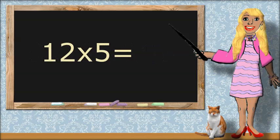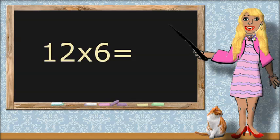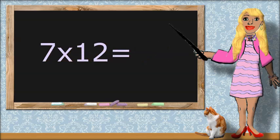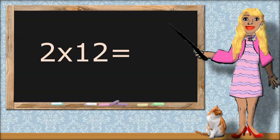Twelve times five equals sixty. Twelve times six equals seventy-two. Seven times twelve equals eighty-four. Two times twelve equals twenty-four.